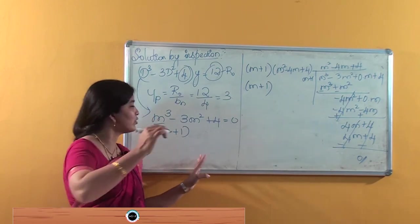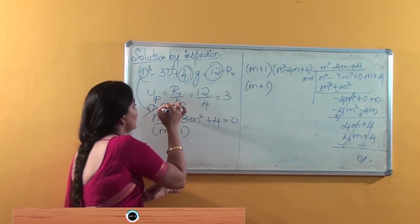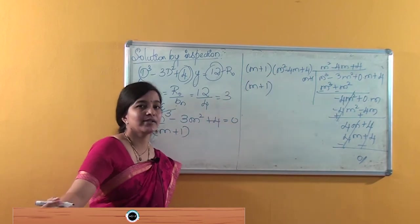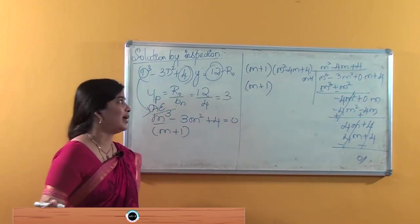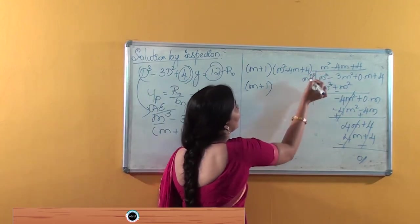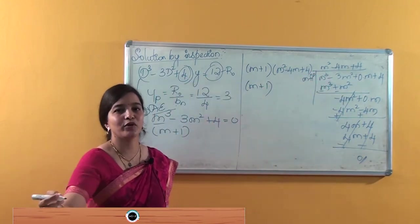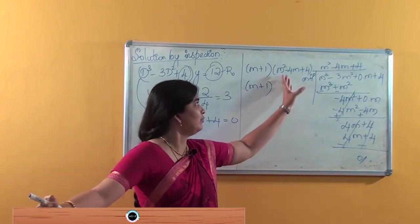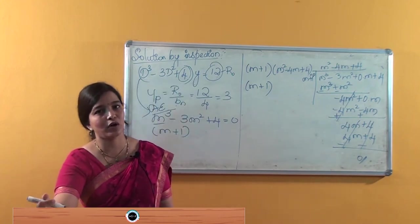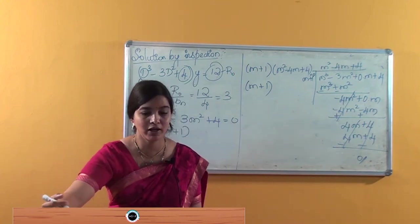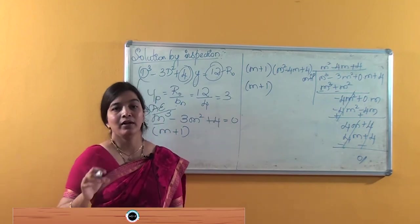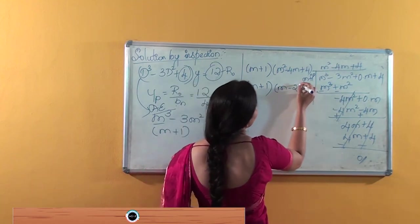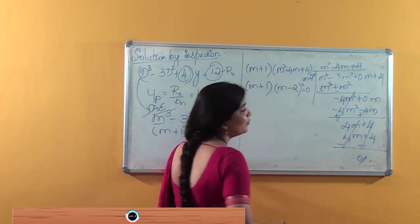We are finding the complementary solution. For the complementary solution, we wrote the auxiliary equation, and by solving it we got: (m + 1)(m² - 4m + 4) = 0. Simplifying that quadratic gives (m - 2)² = 0.